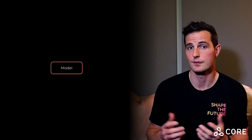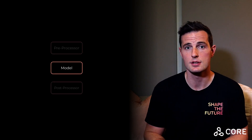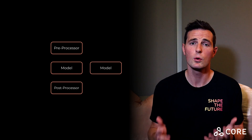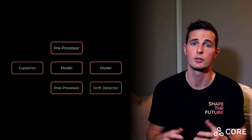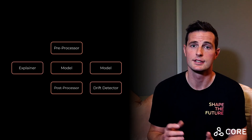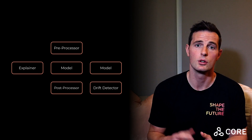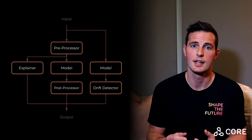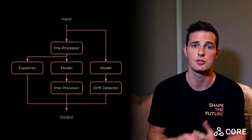Machine learning applications are increasingly not just as simple as a single model deployed to an endpoint. They consist of feature transformations, multiple models and monitoring components all combined to build a sophisticated production system. In Seldon Core, you can build pipelines that connect these components into data-centric workflows.